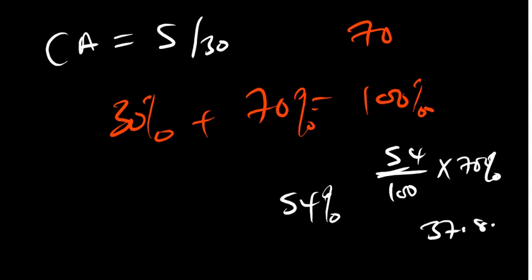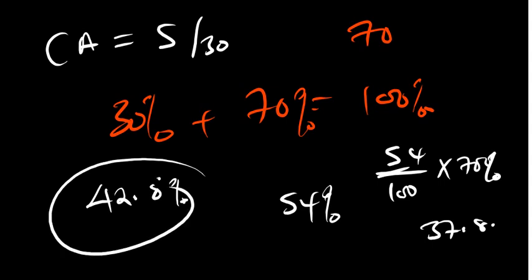Let's say your CA is 5. So 37.8 plus 5 gives me 42.8%, which is a C.